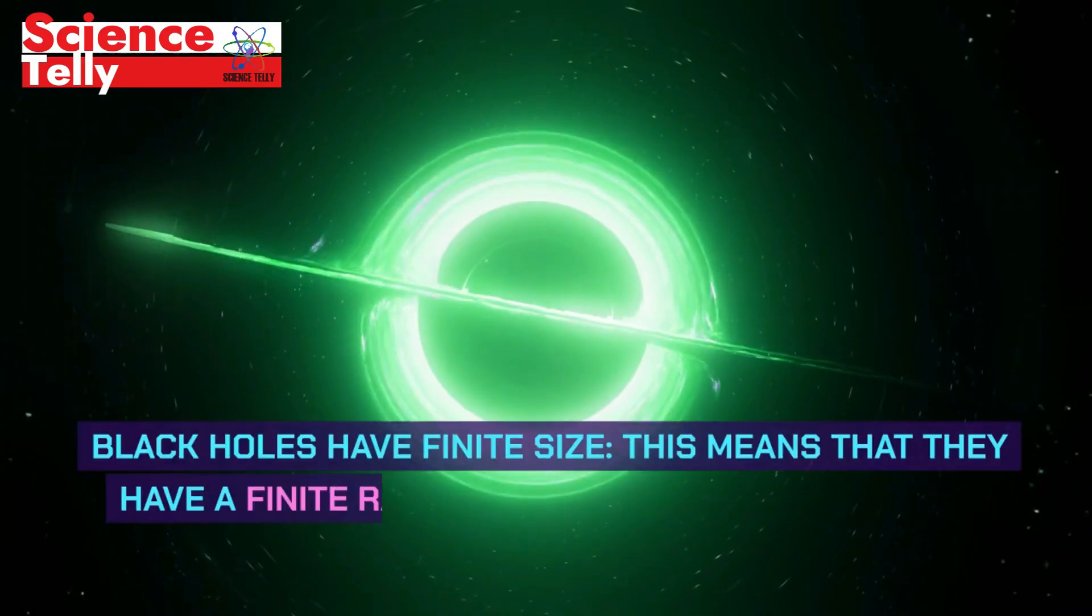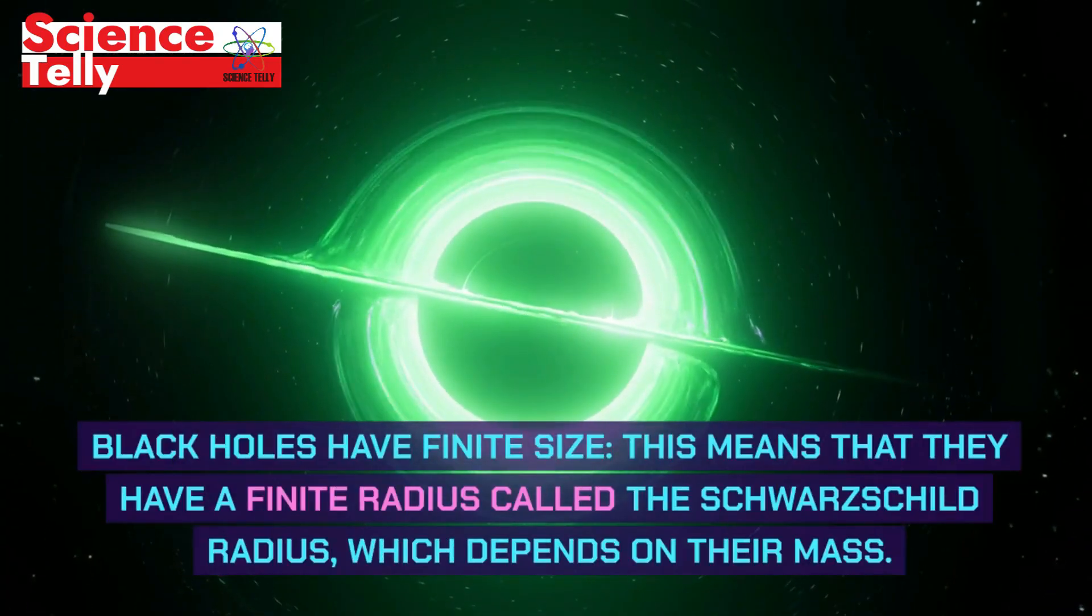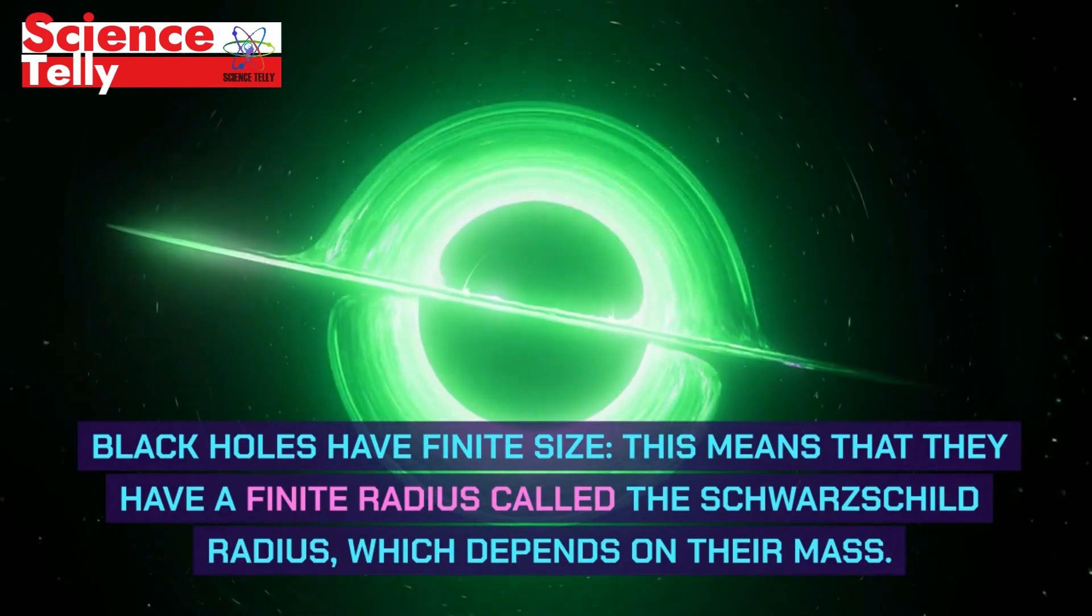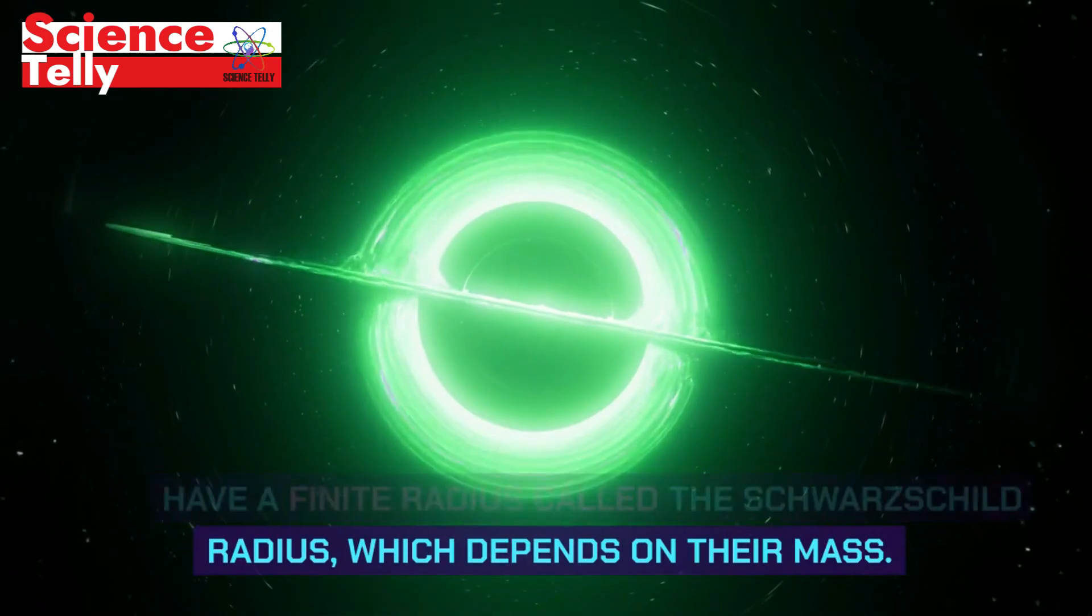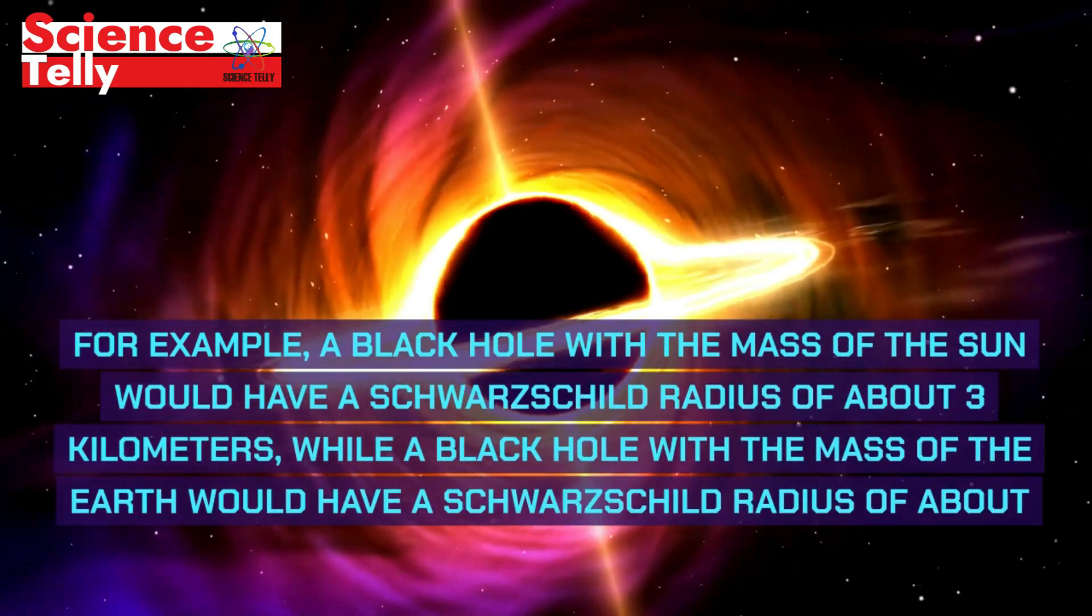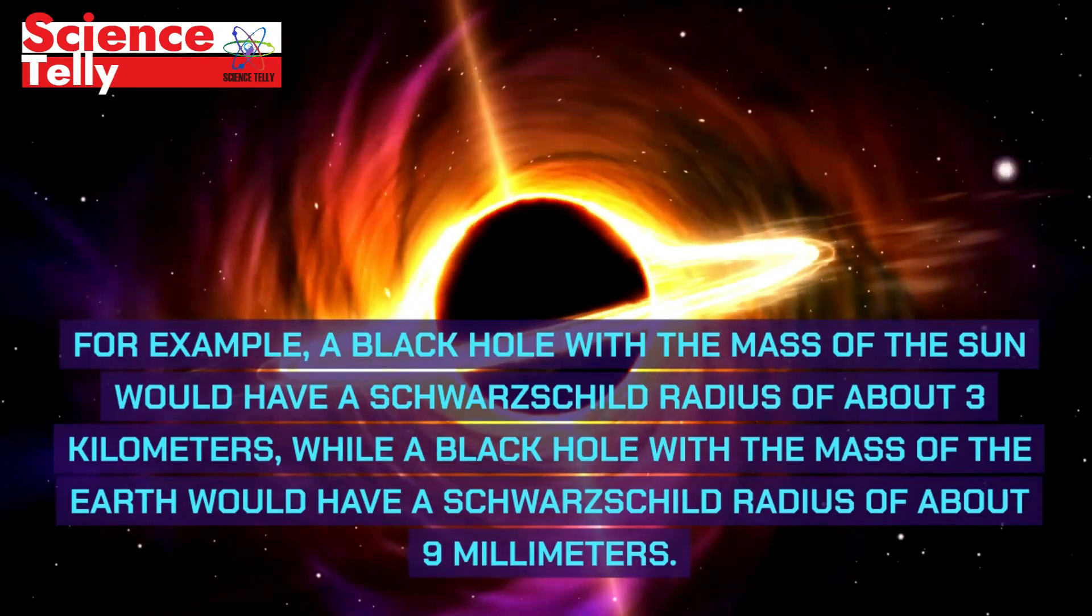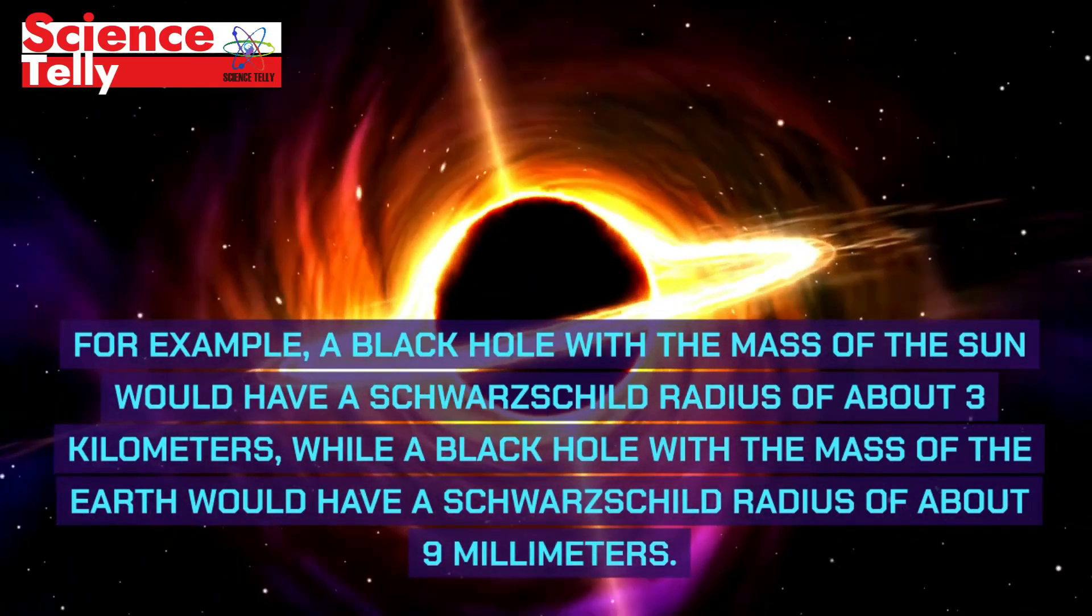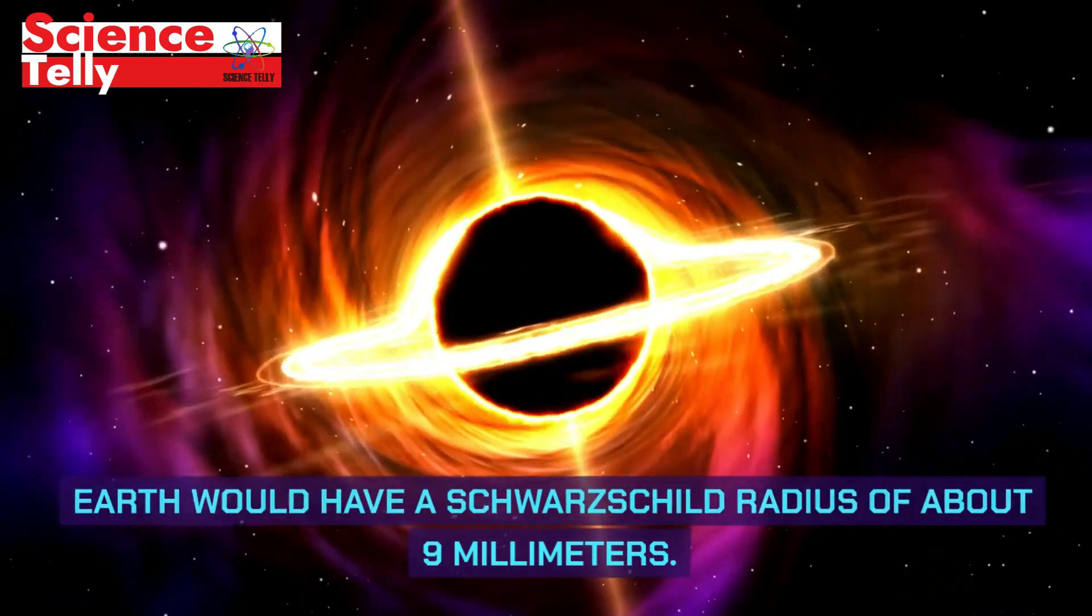Black holes have finite size. This means that they have a finite radius called the Schwarzschild radius, which depends on their mass. For example, a black hole with the mass of the Sun would have a Schwarzschild radius of about three kilometers, while a black hole with the mass of the Earth would have a Schwarzschild radius of about nine millimeters.